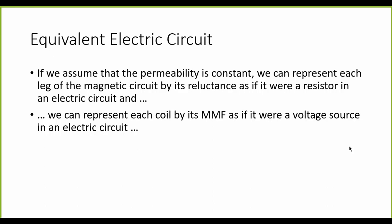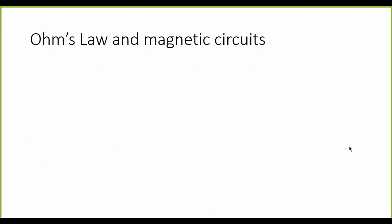So we represent the legs of the circuit with reluctances like resistors, and we represent coils with voltage sources using the value of the MMF of each one of the coil. I better show you how this is done.